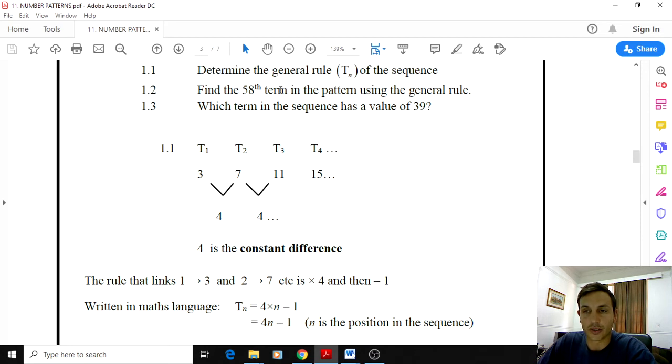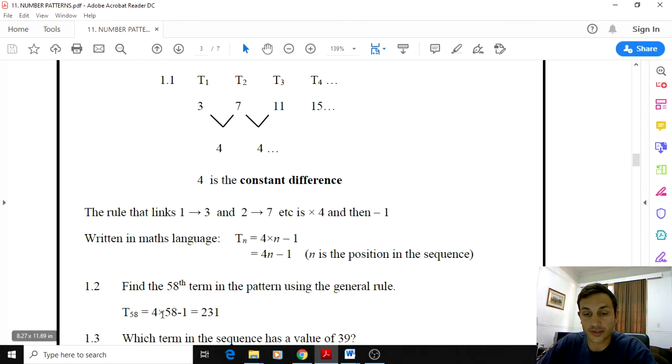Find the 58th term in the pattern using the general rule. That's the next question. So 58th term, that's its position. We need to find the value of that term. Remember position must go in the place of n because n represents position. So you will have to say 4 times 58 minus 1. And that is going to give you the value of the 58th term, which is 231.